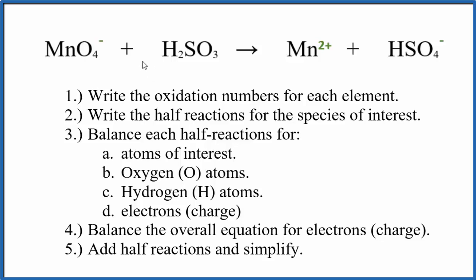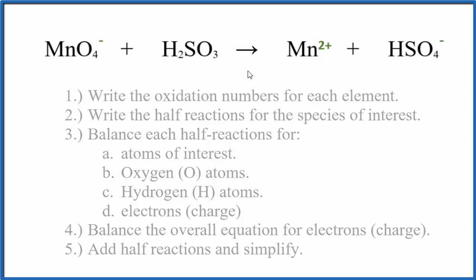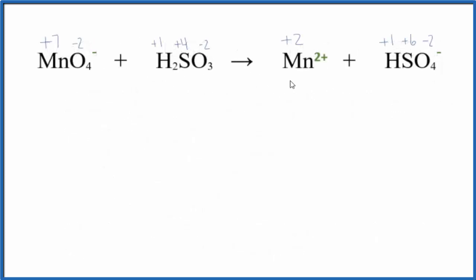Step number one is to write the oxidation numbers for each of the elements here in our equation. When you do that, these are the oxidation numbers you end up with. If you need help with that, there's a link in the description for finding oxidation numbers. You need to get these right or nothing else works after this first step.